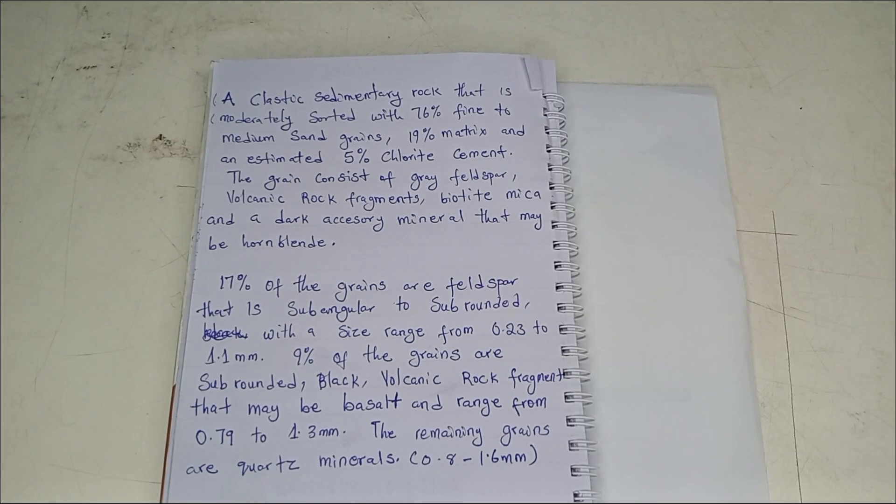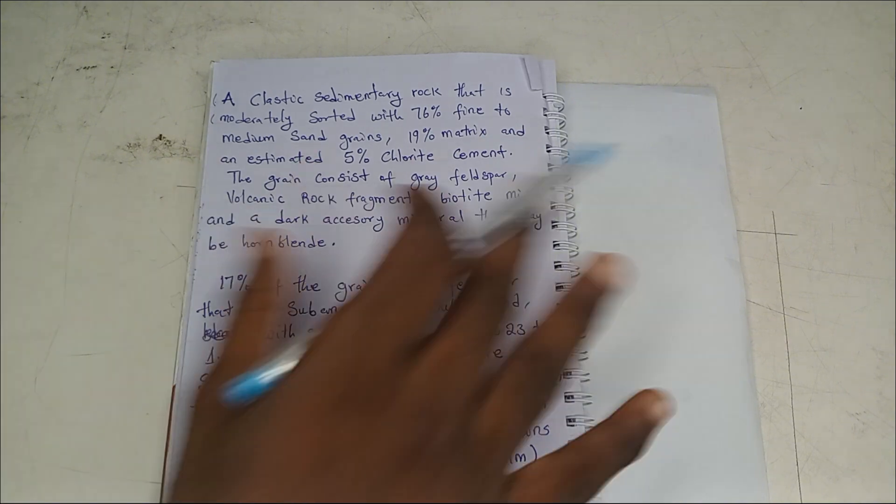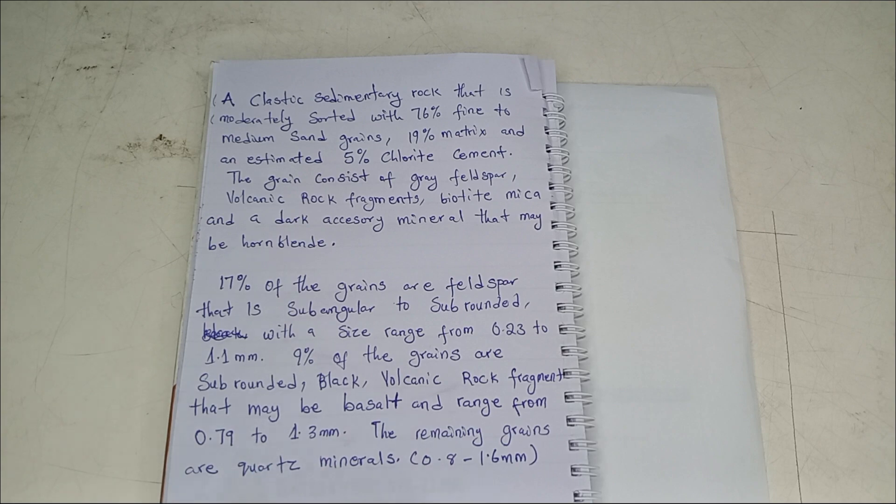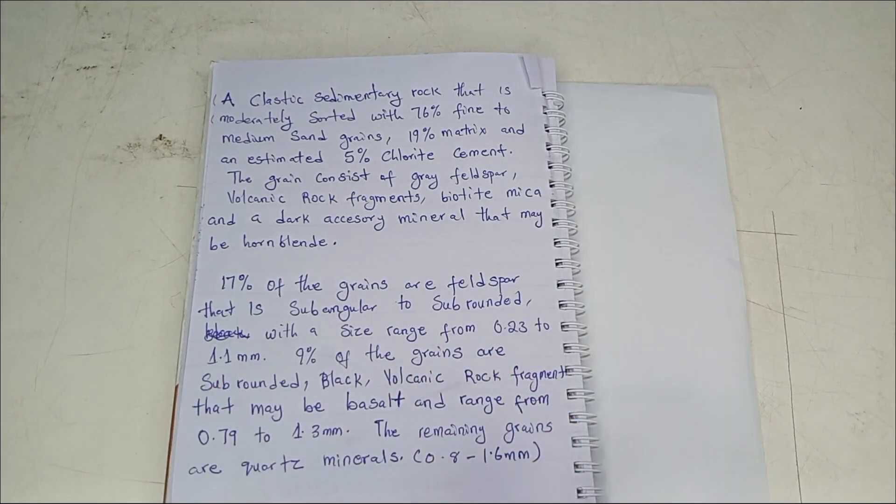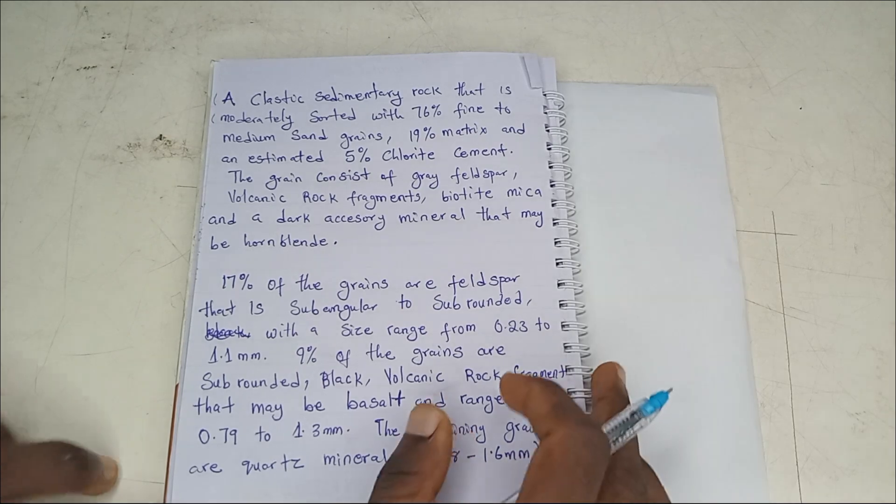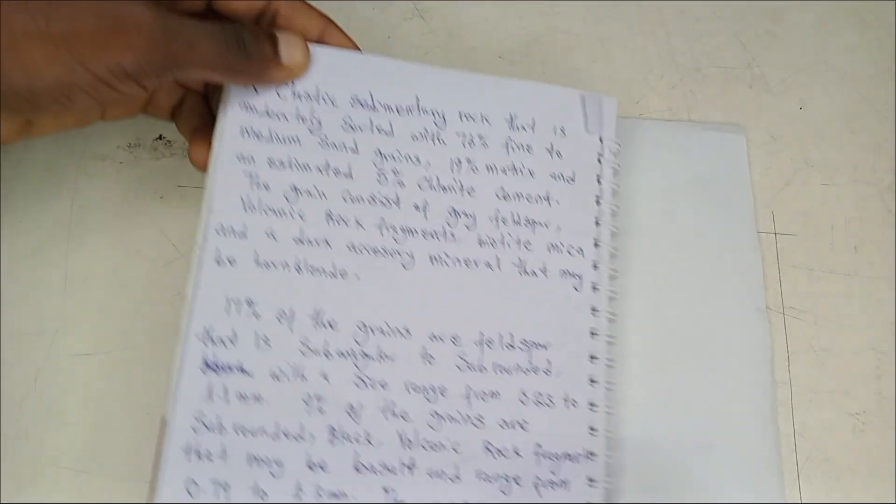Welcome to the third video on our rock classification series. We have a question from past exam papers. We're going to analyze this question, draw a ternary diagram, plot our X on it, and name the rock. The first step is to identify two things: the metric percentage and the grains.